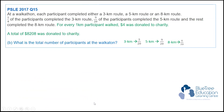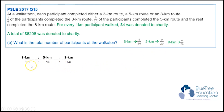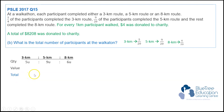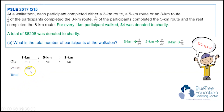Let's take a look at part B: what is the total number of participants at the Walkathon? I've written the information over here for easy reference, and I'm going to write them down in the form of a ratio — 5 units, 9 units, and 6 units. At the side, we will write quantity, value, and total. This is a quantity times value type of question because the items are the number of participants and the value refers to the distance covered by each of them.